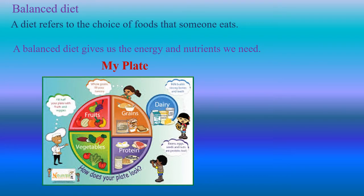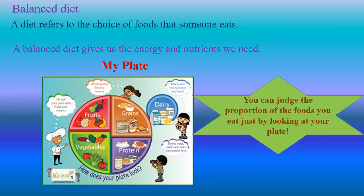My Plate. Here you can see the MyPlate diagram showing grains, fruits, vegetables, protein — meaning meat and eggs — and dairy products. You can judge the proportion of the foods you eat just by looking at your plate.